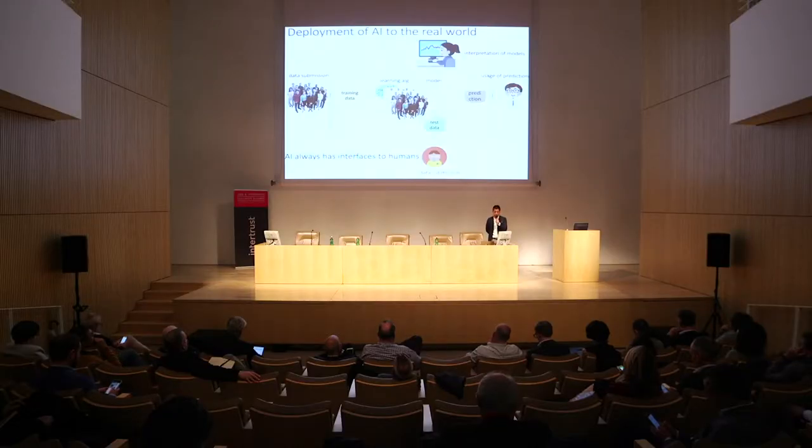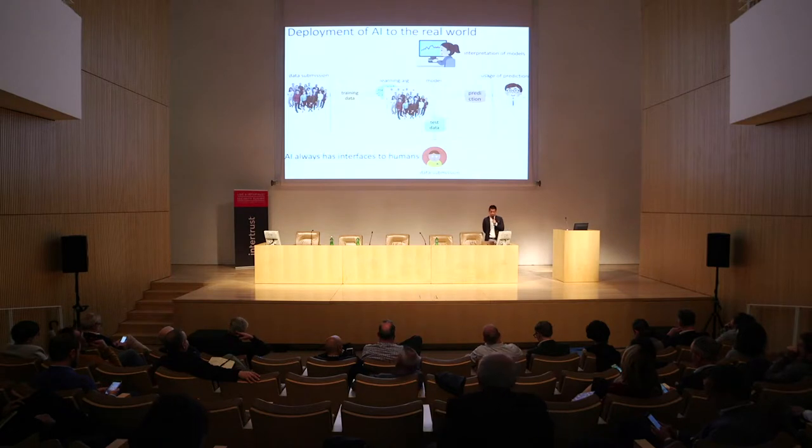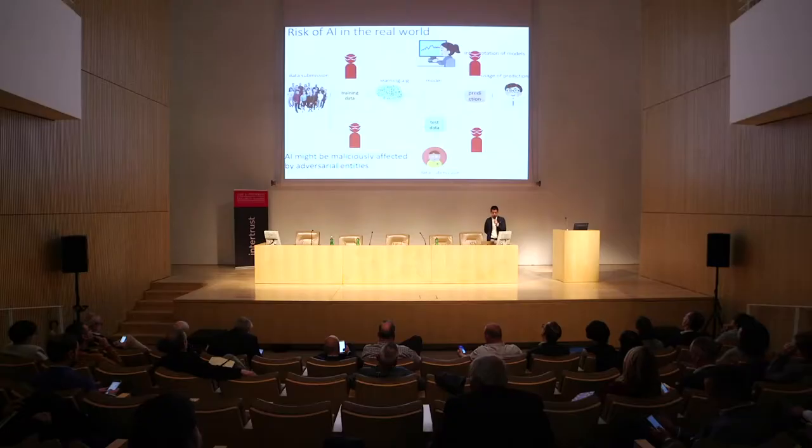In prediction, given a face image without a name, the machine learning model gives the identity of the face. In the laboratory, as long as the model is trained with a sufficiently large number of training samples, it gives correct predictions. But if AI is deployed in the real world, the system needs to interact with various entities, and we have to be aware that such entities may often have malicious intentions to affect and control the result of the AI in an arbitrary way.